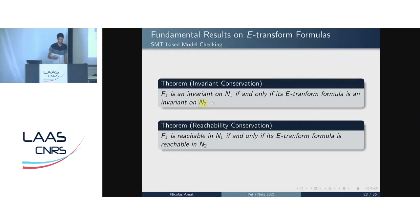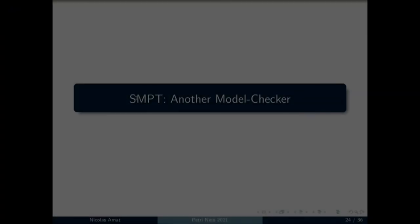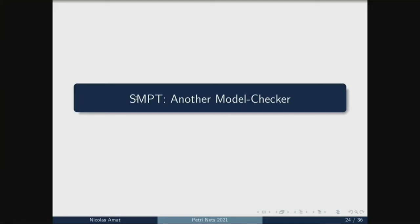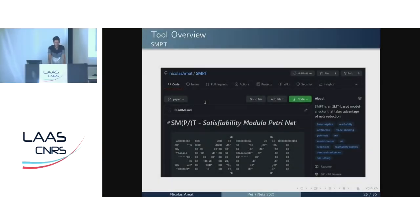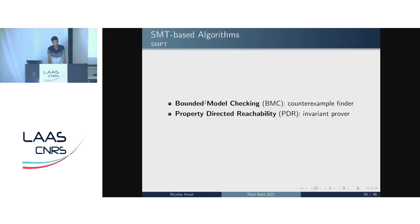From this theory and framework, we developed a model checker called SMPT — Satisfiability Modulo Petri Nets. It is available on GitHub, open source, and written in Python. The model checker uses two main methods: Bounded Model Checking (BMC) to find counter-examples by unfolding the net, and Property-Directed Reachability (PDR) to prove invariants. We adapted the PDR algorithm for generalized Petri nets using reductions in the coverability case.